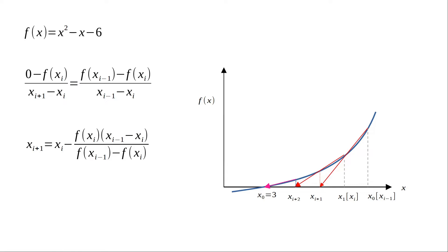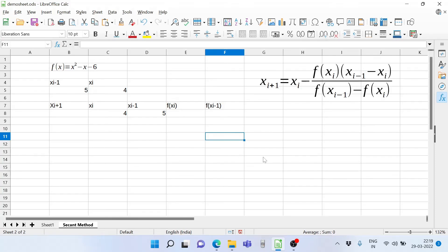Let's demonstrate this on a spreadsheet — a great way to show the method, and whatever I demonstrate can also be done with pen, paper, and a calculator. Here's the spreadsheet: the equation is f(x) = x² - x - 6, and the formula for estimating xᵢ₊₁ is written down. For the first values we take xᵢ = 4 and xᵢ₋₁ = 5, where the function is positive at both points.